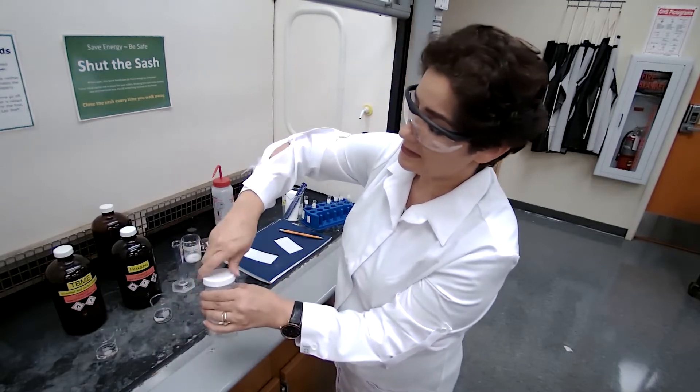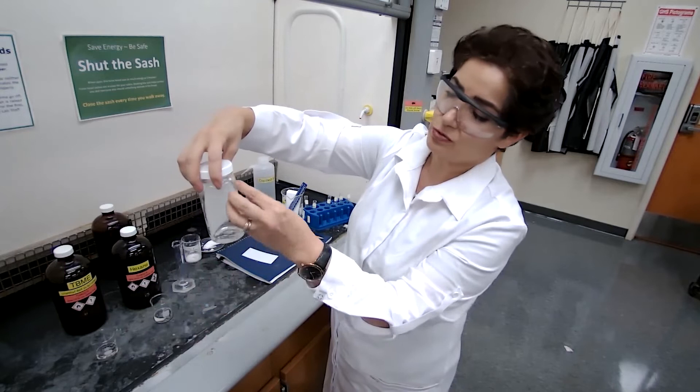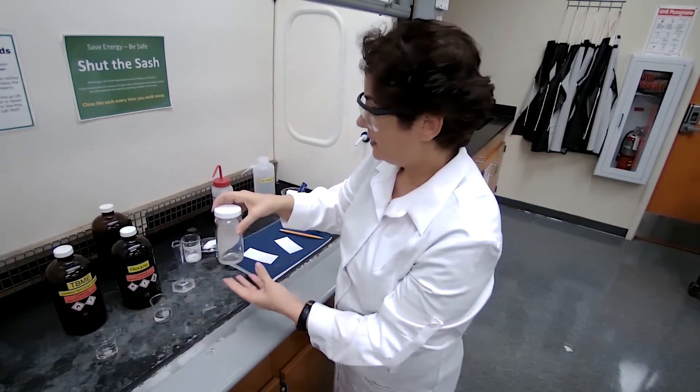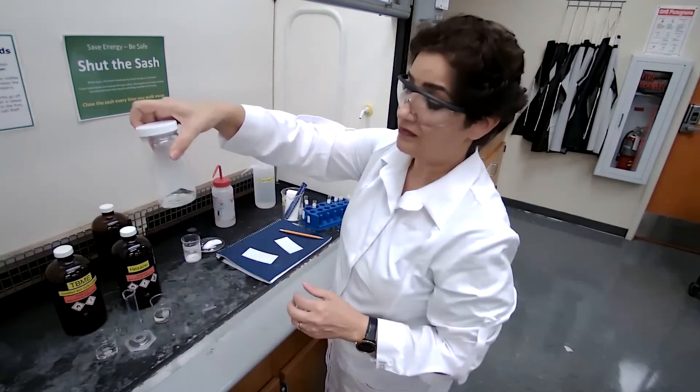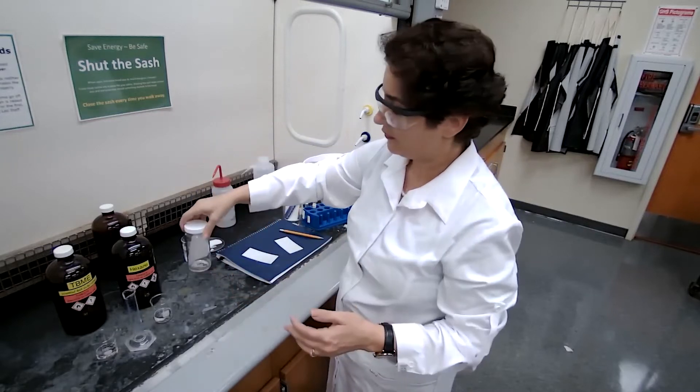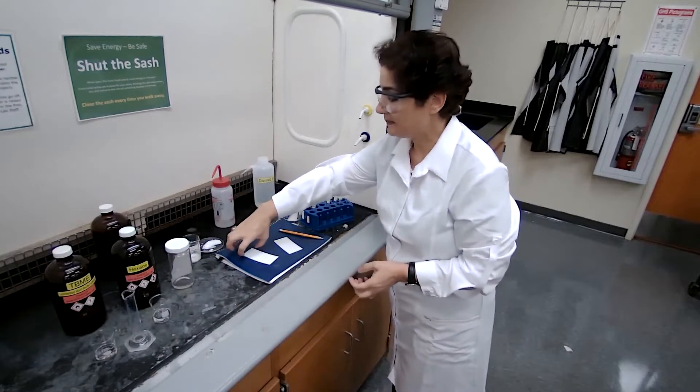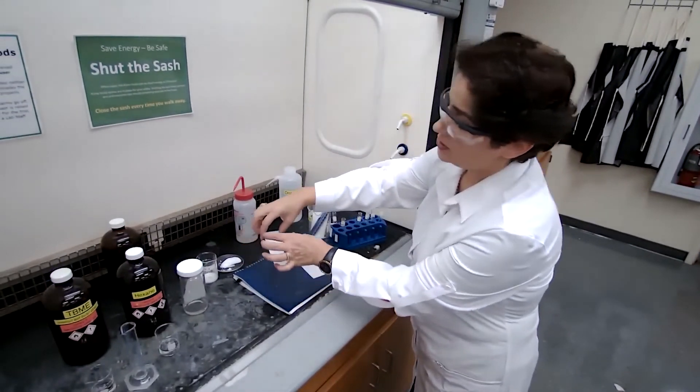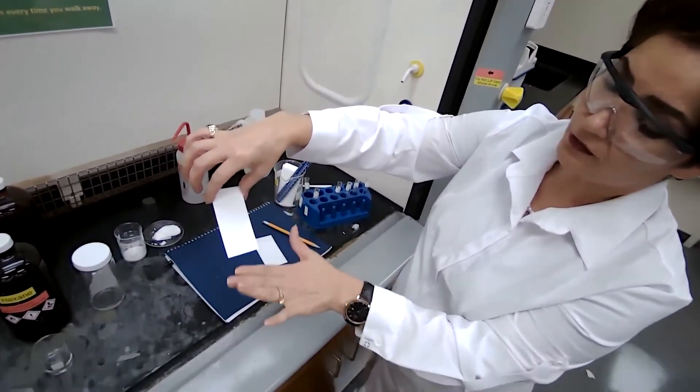We are going to close this jar. I like to swirl it to make sure that vapor is generated inside the developing chamber. It gets saturated with the vapor faster or smooth moving. As I said before, just repeating. Our TLC plate, I again, touching just the side of the plate, not trying not to touch the surface of the plate.